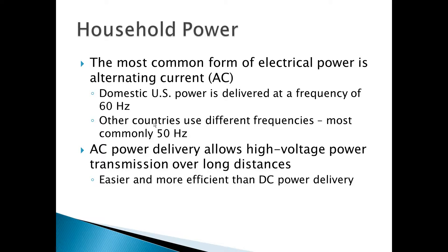In the United States, we deliver our power from the power plants across the domestic grid at a frequency of 60 hertz, and this is delivered as a sine wave. Other countries use different frequencies, most commonly 50 hertz. AC power delivery allows us to deliver power at a high voltage and transmit this energy over a very long distance, making it easier and more efficient to transfer that power than DC power delivery would.